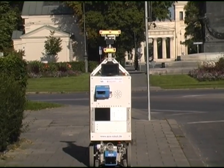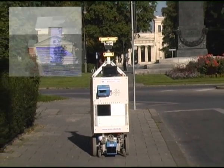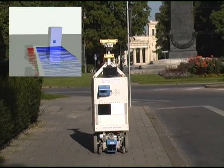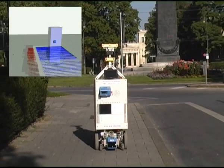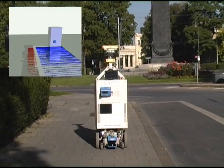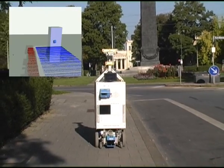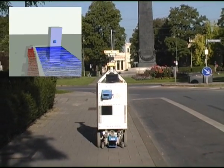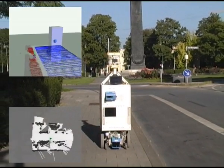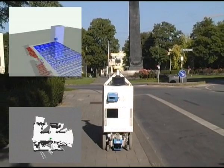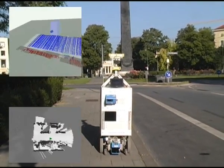To avoid falling down the sidewalk or other negative obstacles, ACE uses a downward-looking laser range finder to assess the traversability of the terrain in front of it. The information from this laser is fused with the occupancy grid used for navigation.